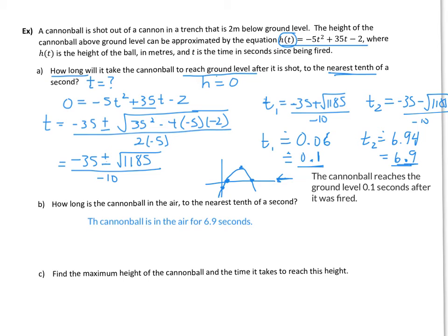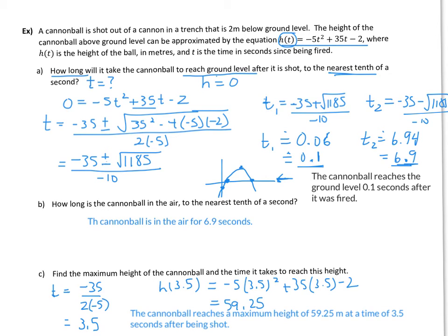Alright, so I have some therefore statements written here. The last question I'm going to do as well. I'm going to use the shortcut of the time being equal to the negative b over 2a. Our negative b would be negative 35 divided by 2 times negative 5. So that's going to give us a positive value out of that. And that positive value is 3.5. So it's going to reach the maximum height 3.5 seconds after it was shot. And then we're just going to sub that 3.5 into the equation for the time and solve for our time. So when we work all that out, we get the cannonball reaches a maximum height of 59.25 meters at a time of 3.5 seconds after being shot.